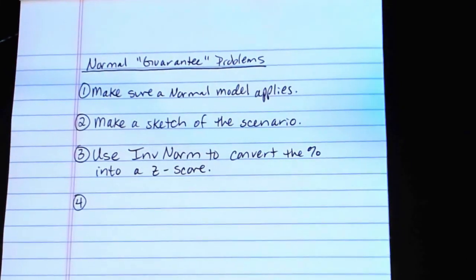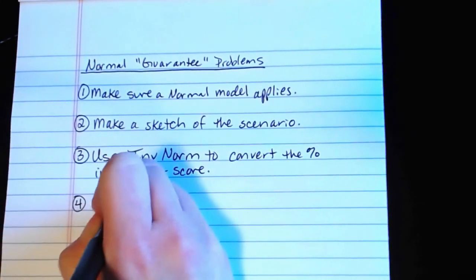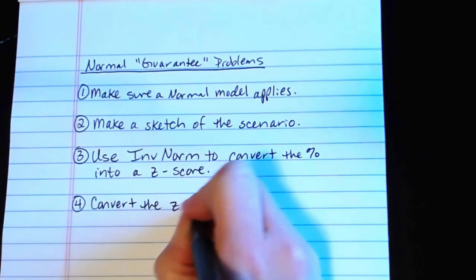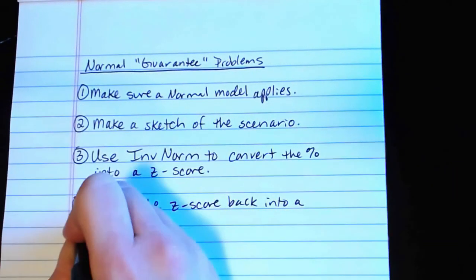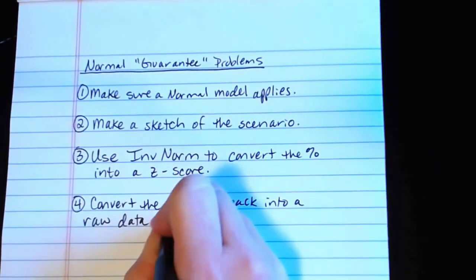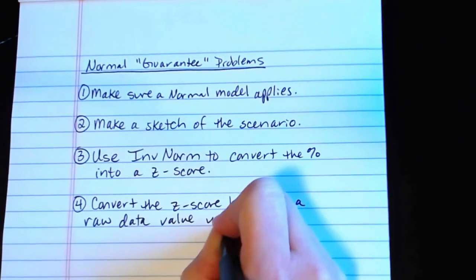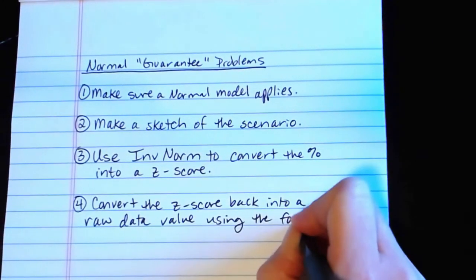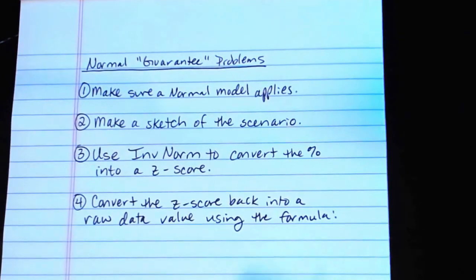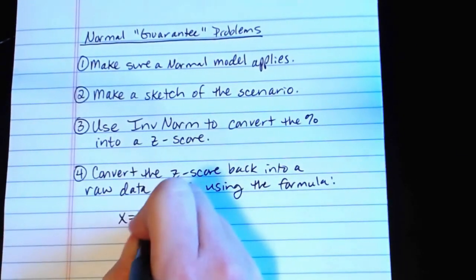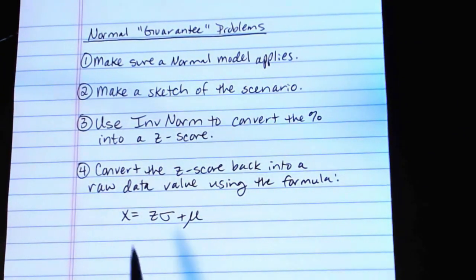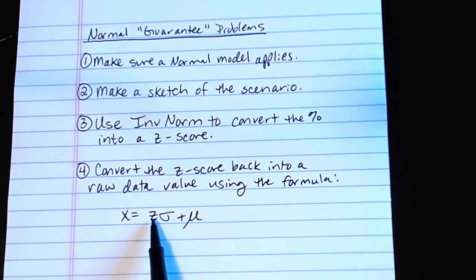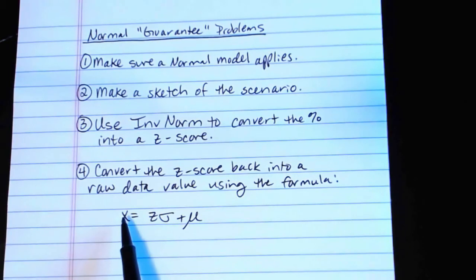And then four, we want to convert the z-score back into a raw data value, or an x value, using the formula x equals z sigma plus mu. That's just a rearranging of the z-score formula, solving for x on the left-hand side. We take the z-score, multiply by sigma, and add mu to get x back.